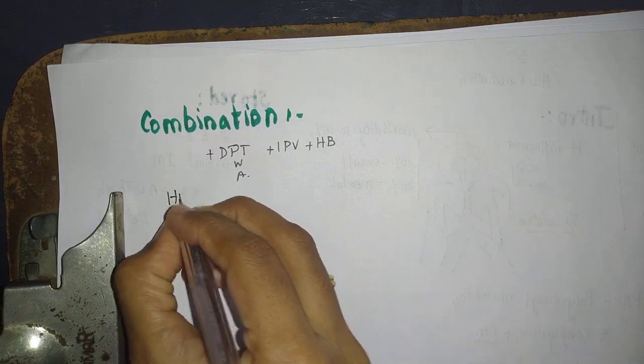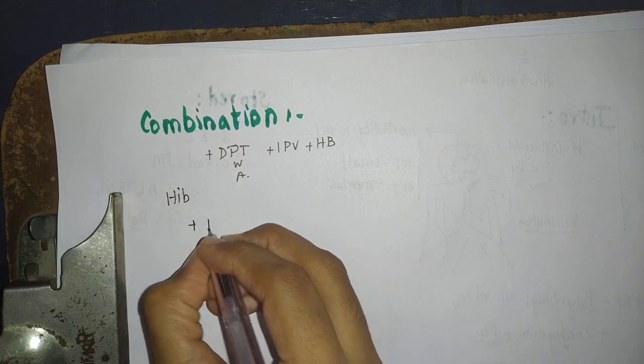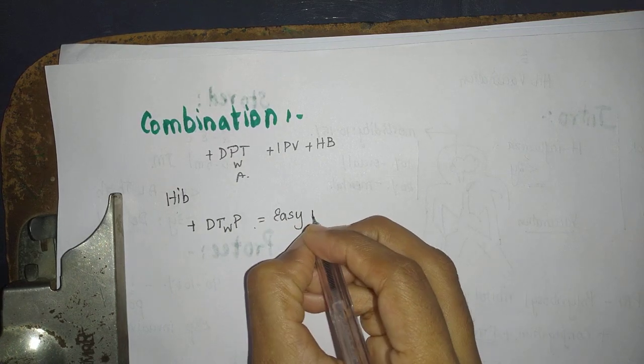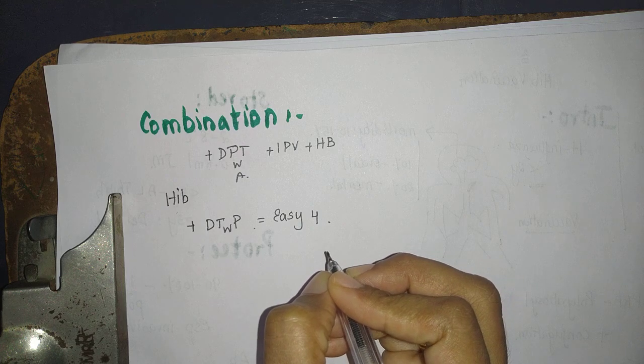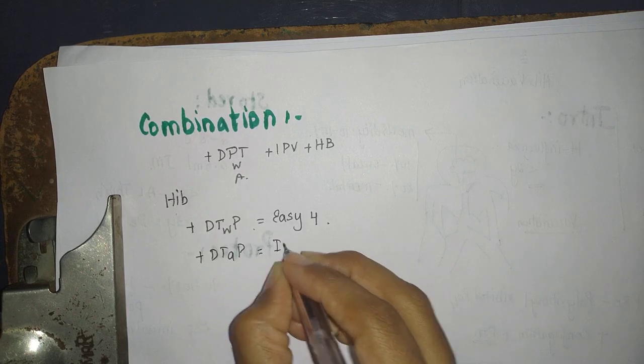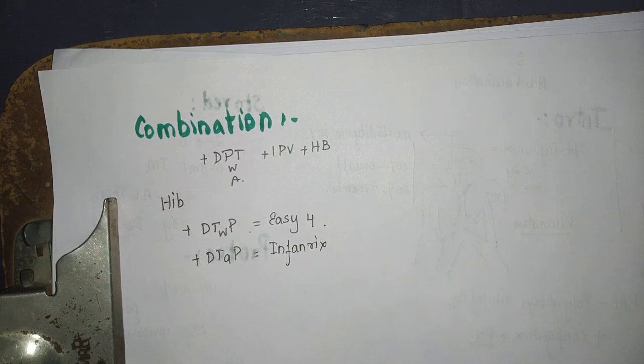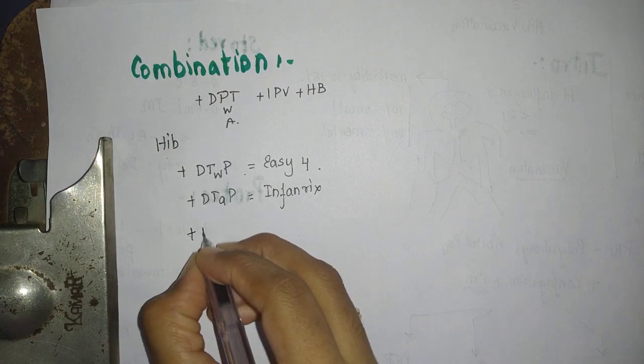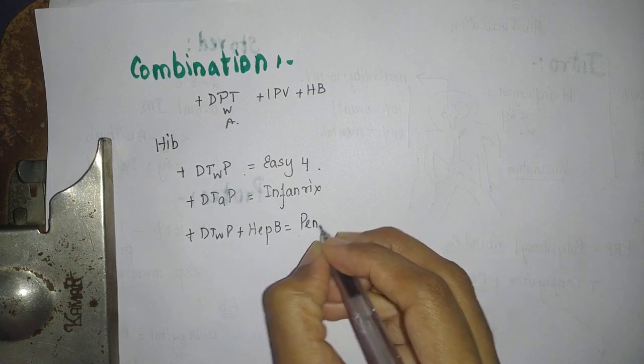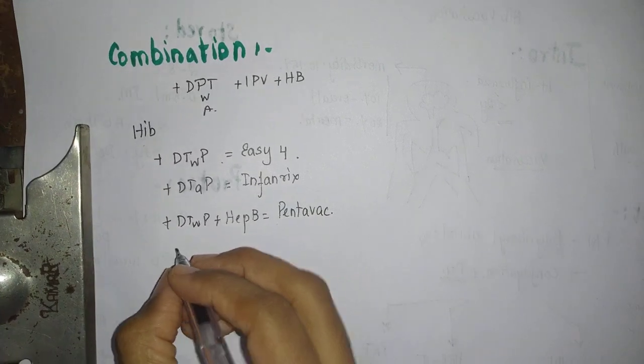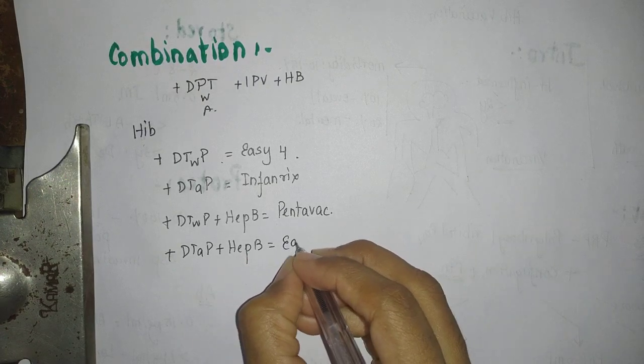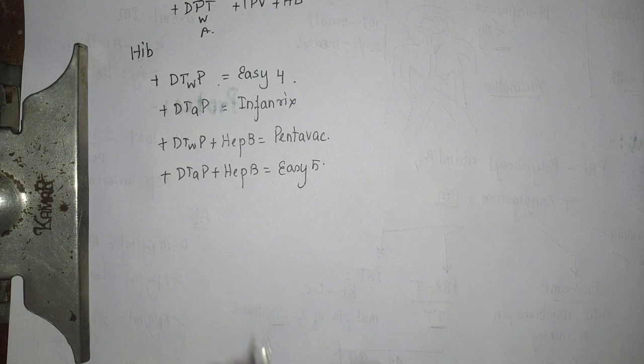A Hib vaccine in combination with whole cell pertussis is EC4. If available with acellular pertussis, then it is Infanrix. If it is available with whole cell pertussis plus hepatitis B, then PentaVac. If it is available with acellular pertussis and hepatitis B, then it is EC5.